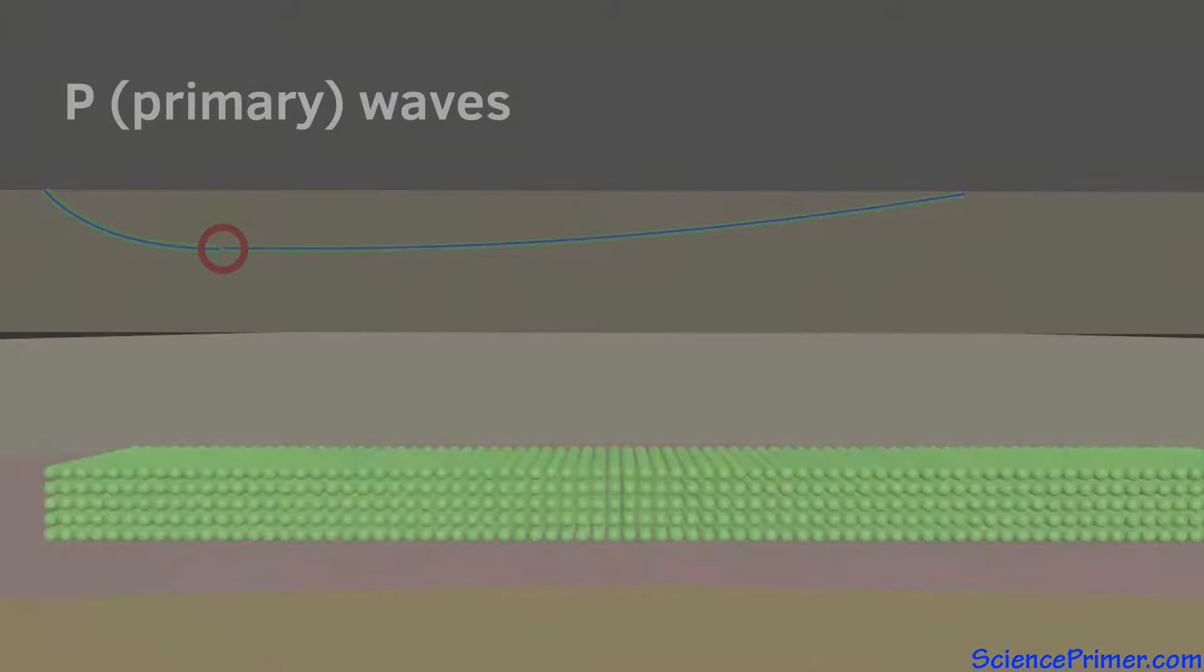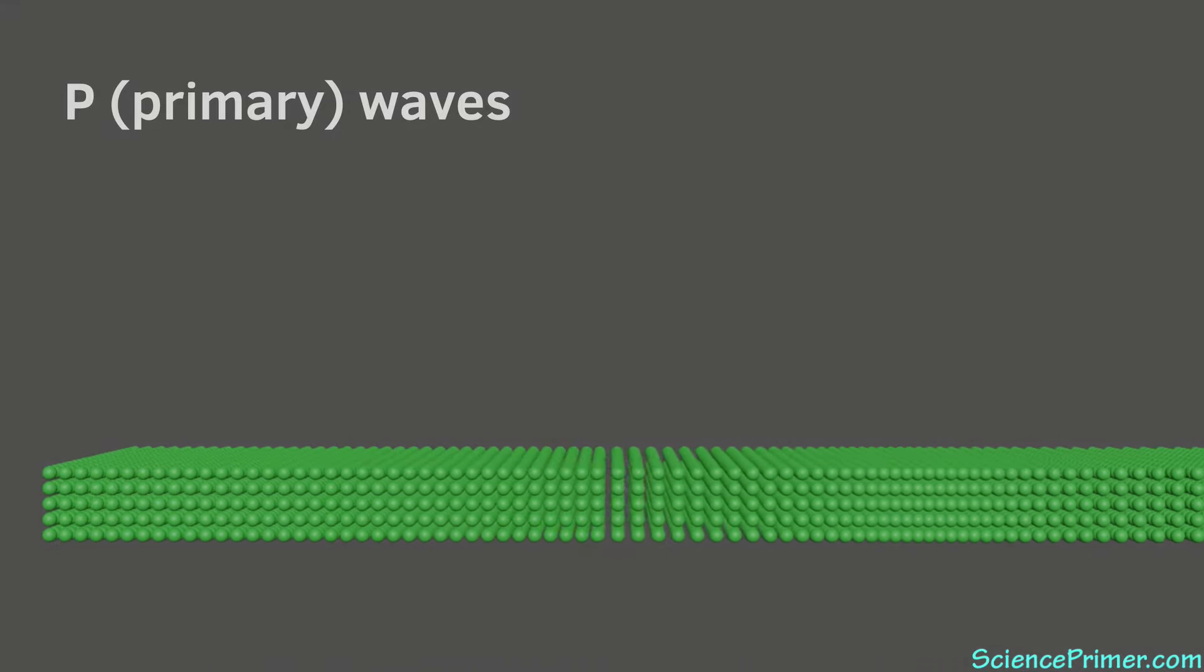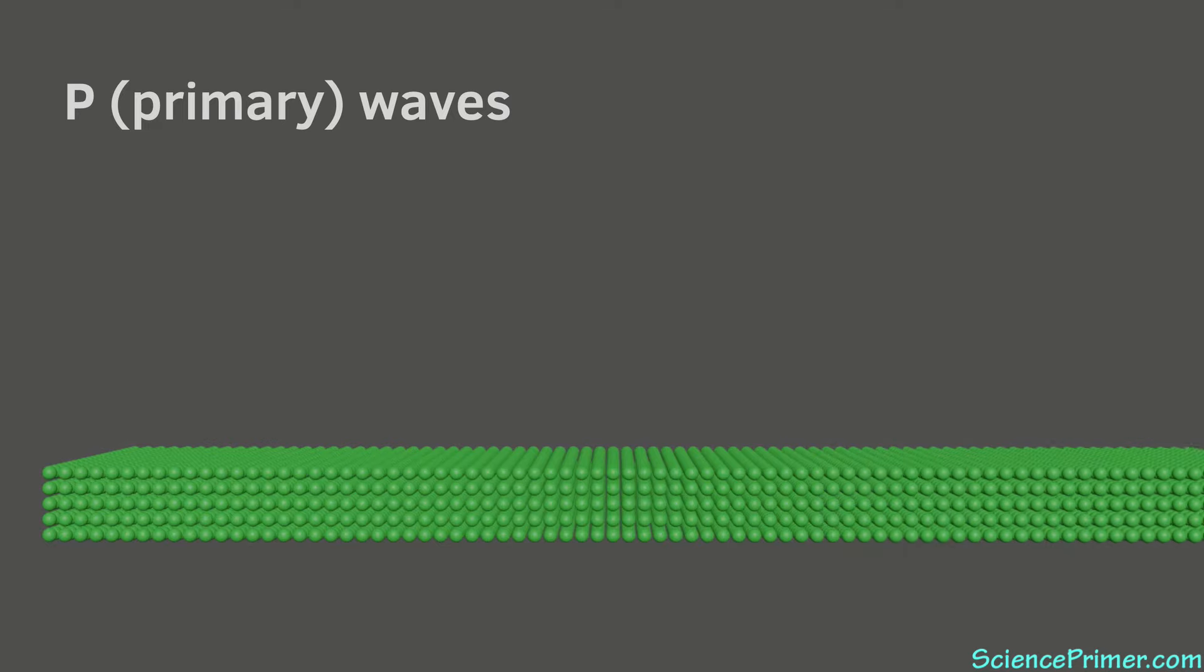P waves are longitudinal waves in which the particles move back and forth in the same orientation as the wave's propagation. They are sometimes called push waves because particle motion pushes energy along in the same orientation as the direction the wave moves.